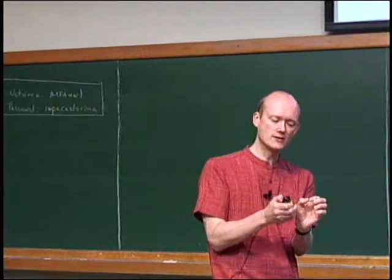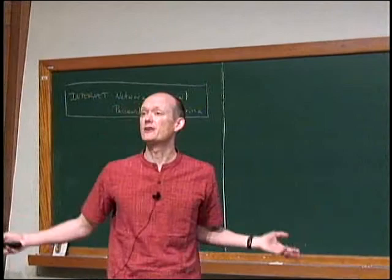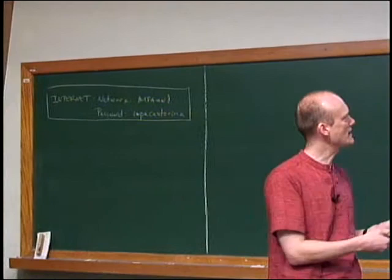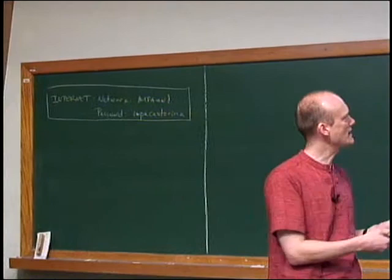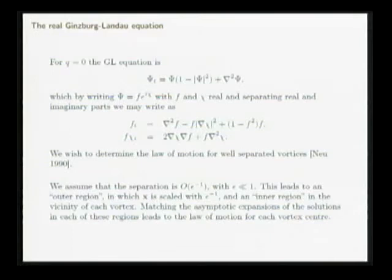In the outer region you see all the vortices but they just appear as defects. In the inner region near each vortex you see the details of that core but you don't see any other vortex. When you match those two expansions together, that gives you a law of motion for how each one moves — effectively the perturbation to the far field due to all the other vortices influences the core in such a way that it makes it move, calculated through inner and outer matched asymptotic expansion.